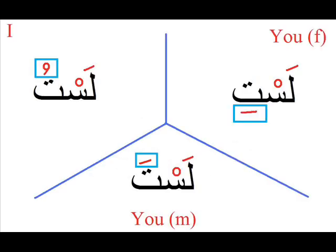The next word is a grammar lesson. In lesson one, we saw the word Laysa, and I told you that Laysa is used to make the negation in Arabic. But you have to know something: Laysa is not constant. It is declined depending on the personal pronoun. For I, you say Lastu.